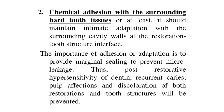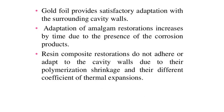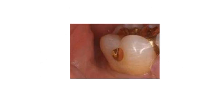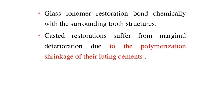The importance of adhesion or adaptation is to provide marginal sealing and prevent micro-leakage, thereby preventing post-restorative hypersensitivity of dentin, recurrent caries, pulp affections, and discoloration of both restorations and tooth structures. Gold foil provides satisfactory adaptation with surrounding cavity walls. Amalgam restoration adaptation increases over time due to the presence of corrosion products. Resin composite restorations do not adhere or adapt to cavity walls due to polymerization shrinkage and different coefficients of thermal expansion. Glass ionomer restorations bond chemically with surrounding tooth structures. Cast restorations suffer from marginal deterioration due to polymerization shrinkage of their luting cements. Ceramic and gold restorations fulfill the requirement of withstanding functional forces without fracture.